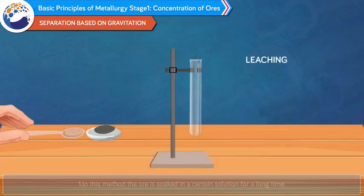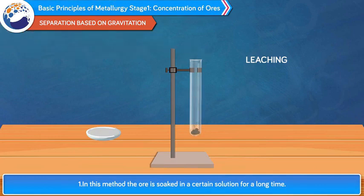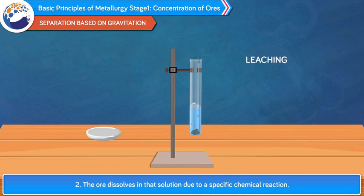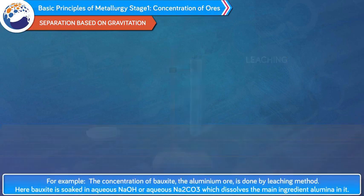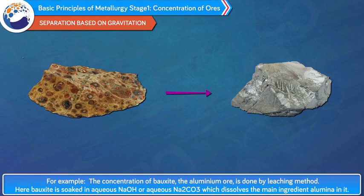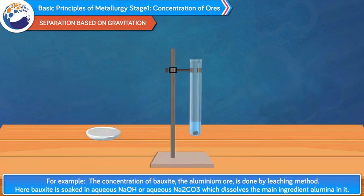Leaching: in this method, the ore is soaked in a certain solution for a long time. The ore dissolves in that solution due to a specific chemical reaction. The gang from the ore can be separated out as it does not dissolve. For example, the concentration of bauxite, the aluminium ore, is done by leaching method. Here, bauxite is soaked in aqueous NaOH or aqueous Na2CO3, which dissolves the main ingredient alumina.